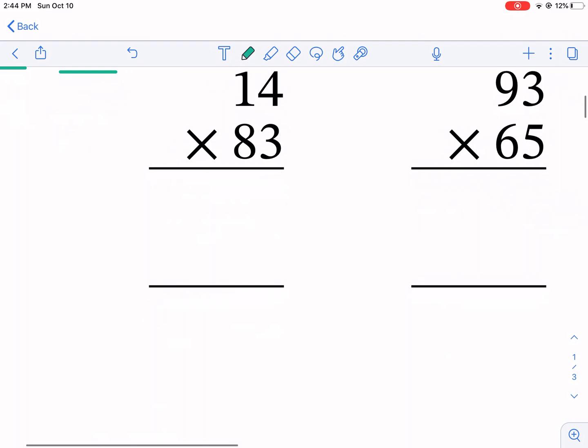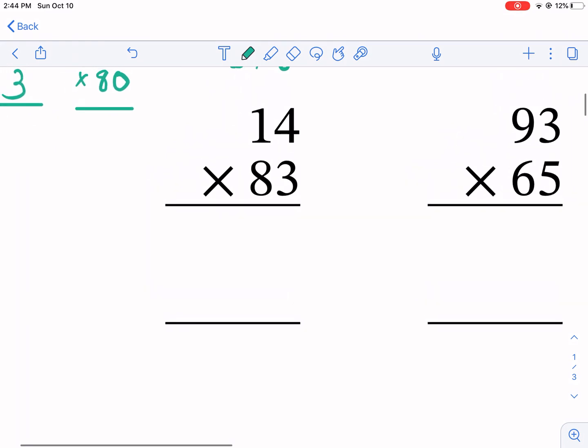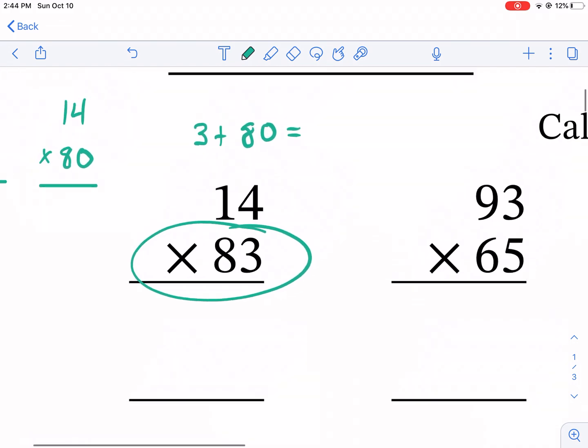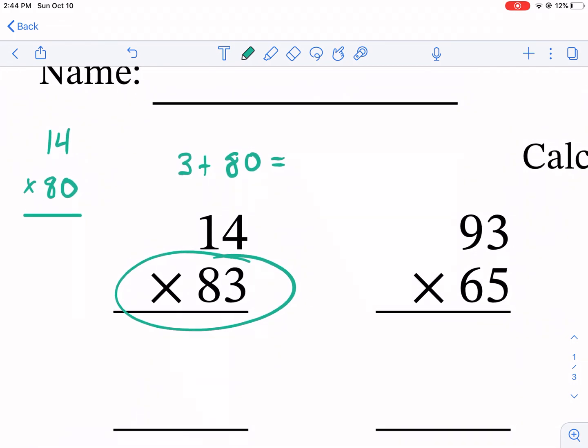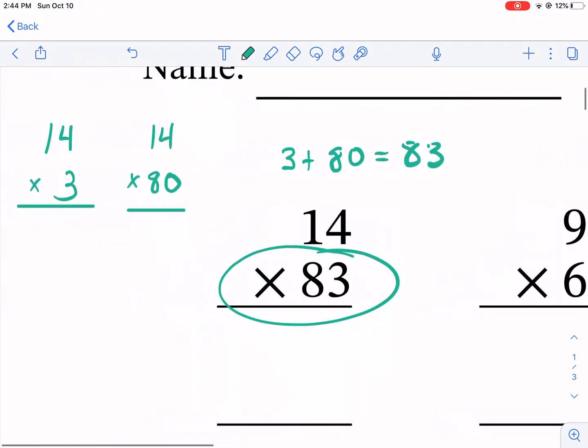Our first problem here, we have 14 times 83. Now what we're going to realize here is 83 is essentially 3 plus 80. That equals 83. So really what we can do here is two different multiplication problems.